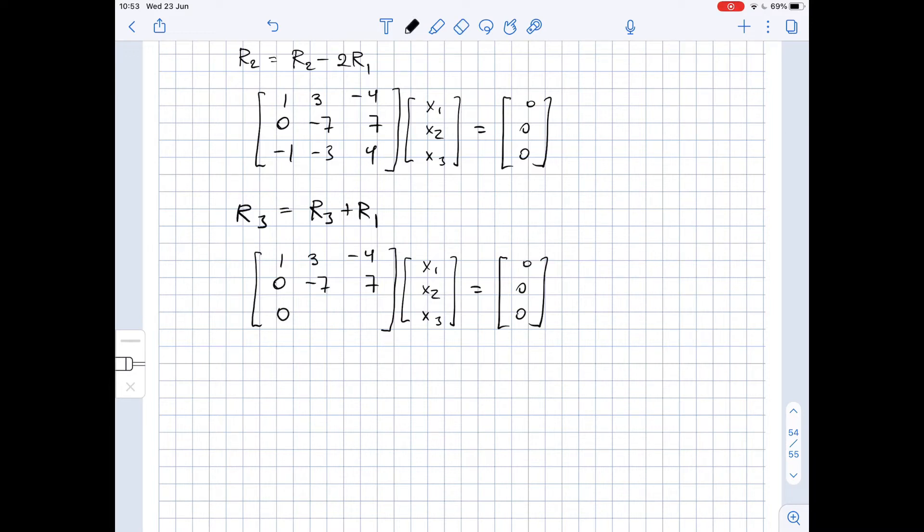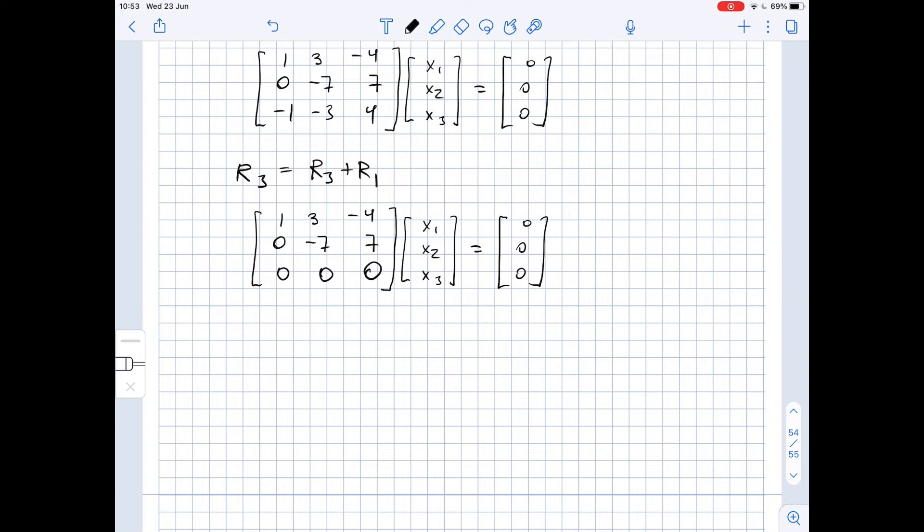Our next step is writing this down as a system of equations. So we got that negative seven x2 plus seven x3 equals zero, so it means that seven x2 equals seven x3, so x2 equals x3.